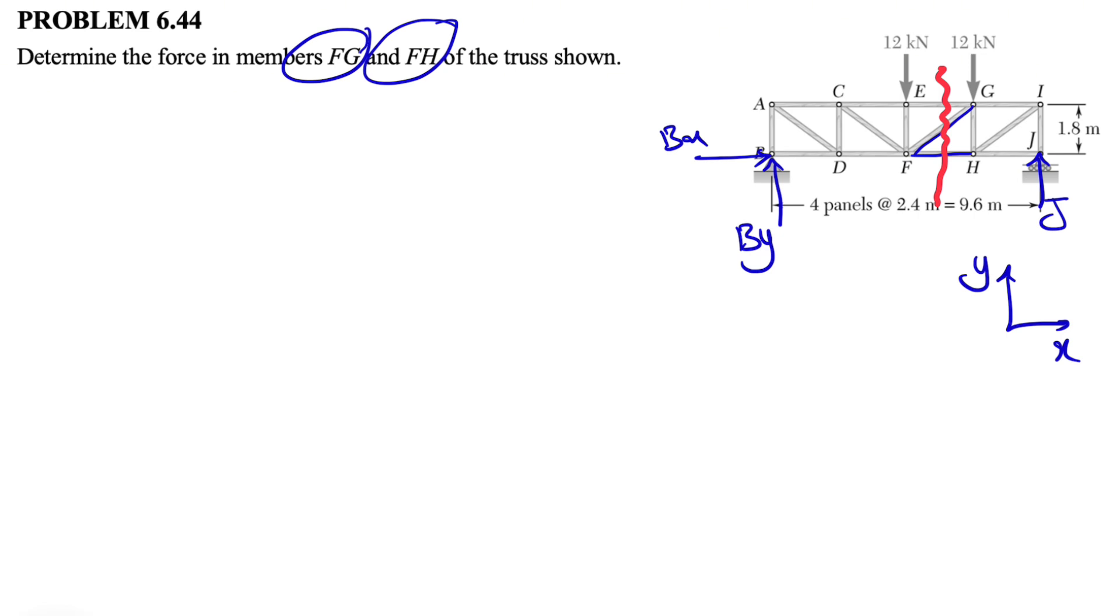And as we can see, the truss is not symmetrical since we have a 12 kN at point G, which is missing at point C. So we cannot assume that BY and J are the same because the loads and the truss are not symmetrical. So let's start with sum of all forces in X direction. Since the only force that we have in X direction is BX, that force is zero. So we can start doing our moment equation about either point B or J in order to find the two unknowns that we have in here.